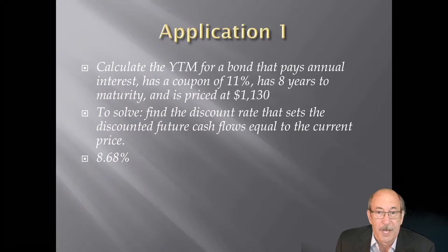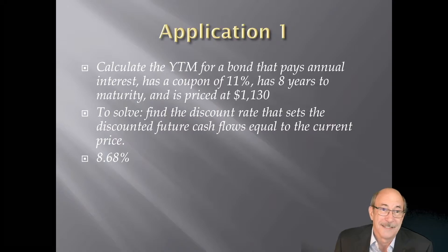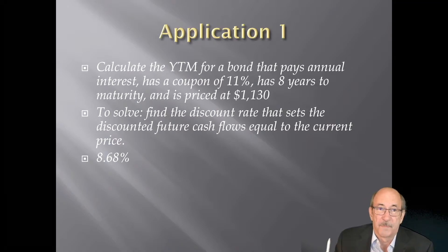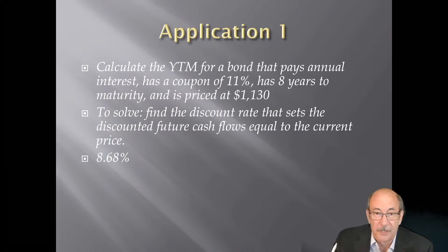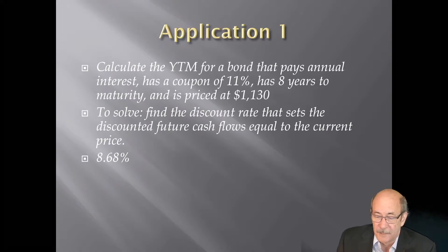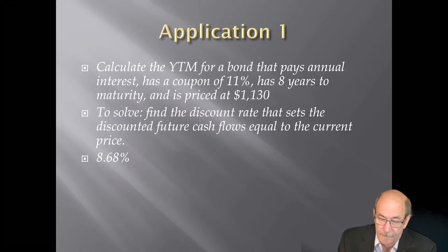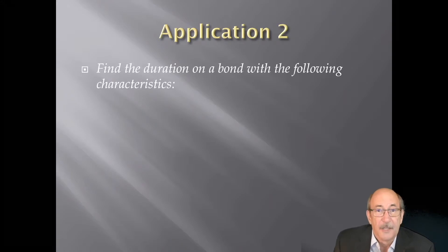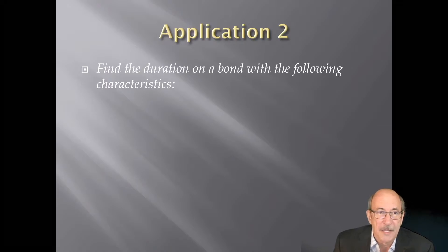Obviously if this were a bond with a callable feature and you wanted yield to call instead of yield to maturity, you'd just look at the time to the first call period. If it had a call that might kick in five years, then the number of periods would be five instead of eight. That one was very basic. This next one is a little more complicated.